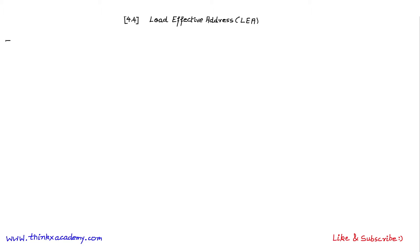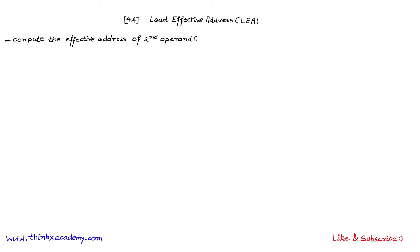Let's see what this instruction is used for. The first point is that LEA is used to compute the effective address — as the name suggests, it actually computes the effective address. Here, address means the memory address only. It computes the effective address of the second operand of our instruction, which is the source.